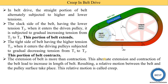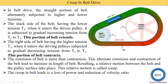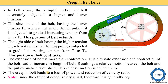When the length of the belt increases, relative motion between the belt and the pulley surface takes place. This relative motion is called creep. Creep in a belt leads to loss of power and reduction in the velocity ratio. The effect of creep is very small, therefore it is generally neglected.